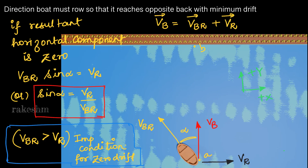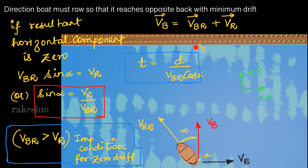In different books you will see different formulas — some write it in terms of cosα, others in terms of sinα, depending on how the angle is defined. Don't be overwhelmed by this; if you understand the concept, you will get the correct answer for any problem. This minimum drift condition is also called crossing the river along the shortest path.